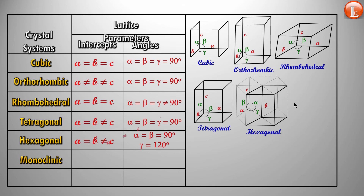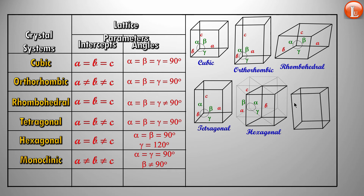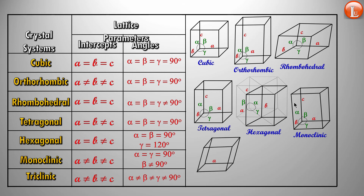Then you have monoclinic: none of the sides are equal, two of the angles are 90 degrees, and one is not. And the last of all is triclinic — you cannot have a shape worse than this in terms of symmetry. None of the sides are equal, none of the angles are equal, and none of them is equal to 90 degrees. Nothing is equal and nothing equals 90 degrees. That's triclinic for you.